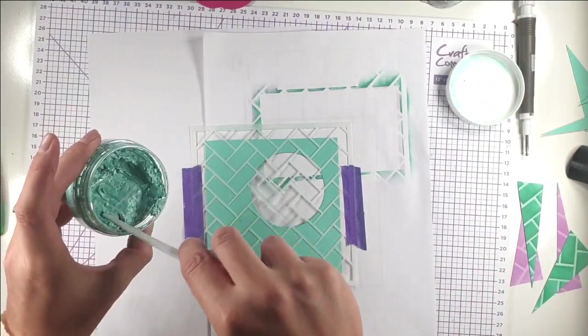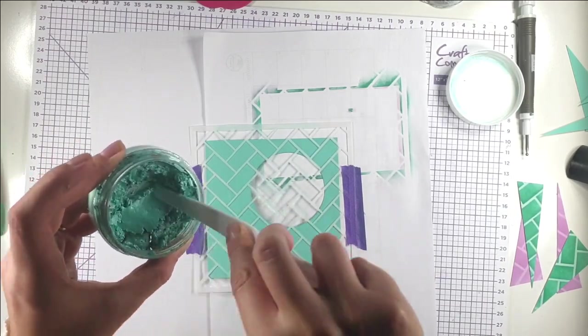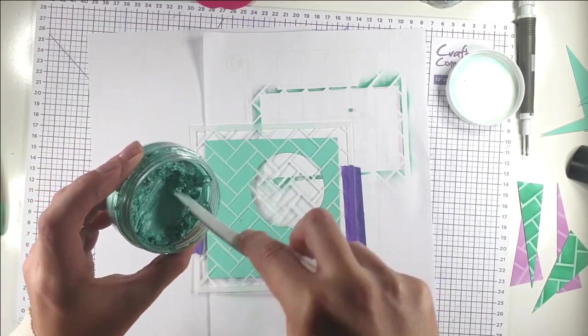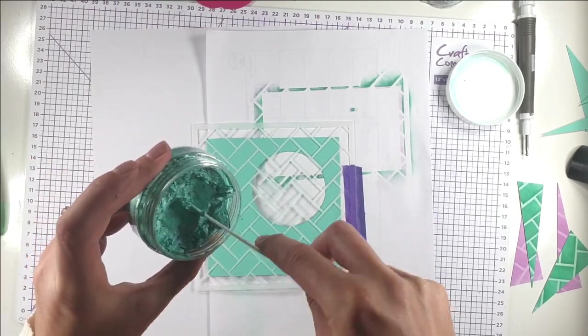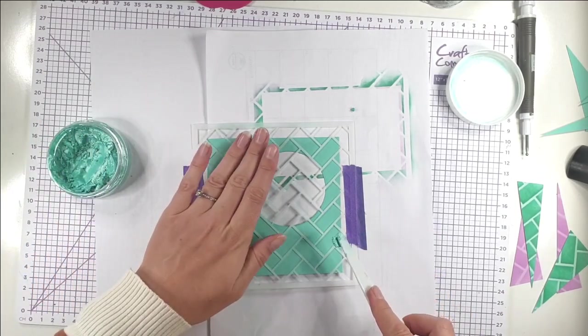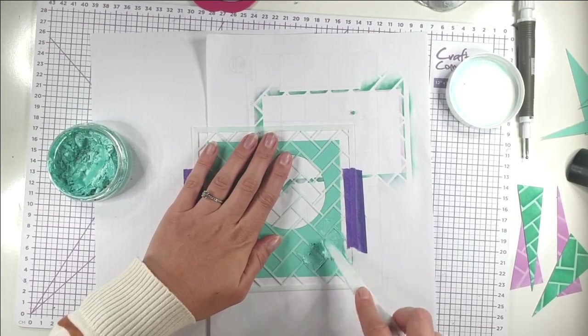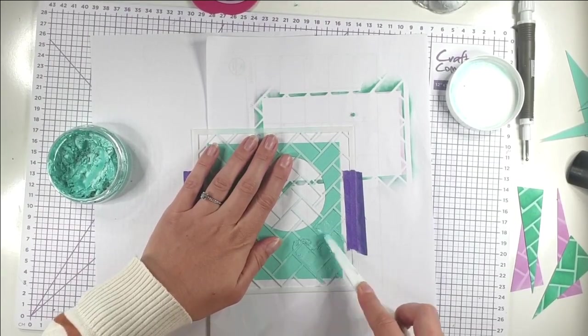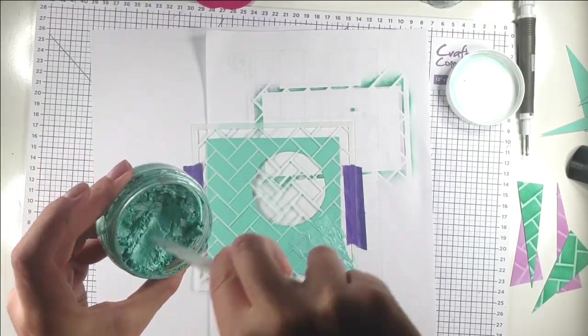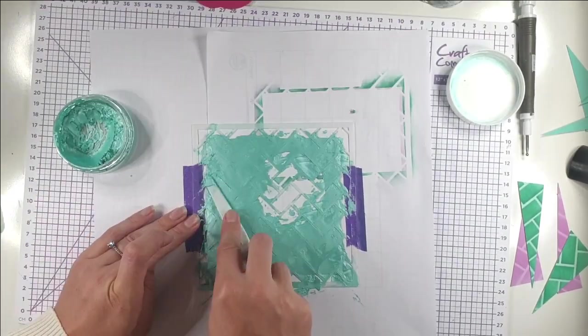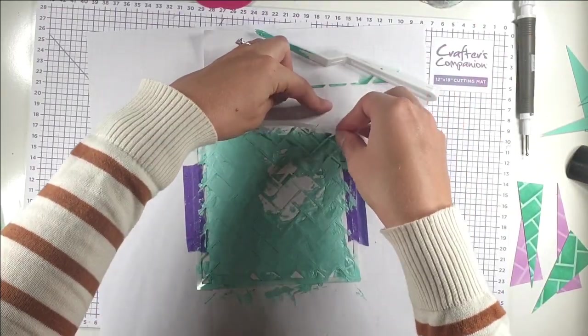I've got this embellishment mousse in Aquamarine from Tonic Nuvo. I'm taking my palette knife and getting that up. It's a little bit crumbly so I'm mixing it about because it's quite an older one. I'm taking a little bit on my knife and pressing that through and spreading it a bit like butter through that stencil.